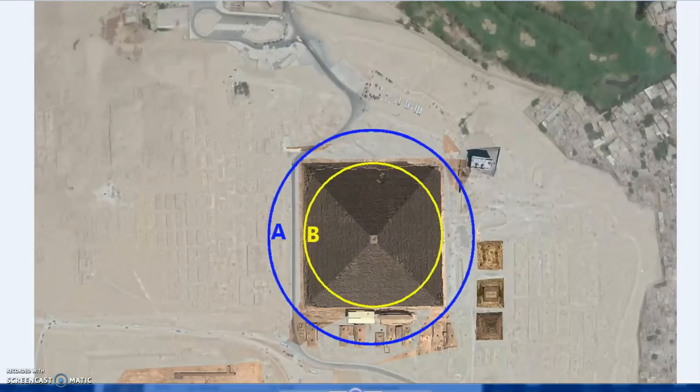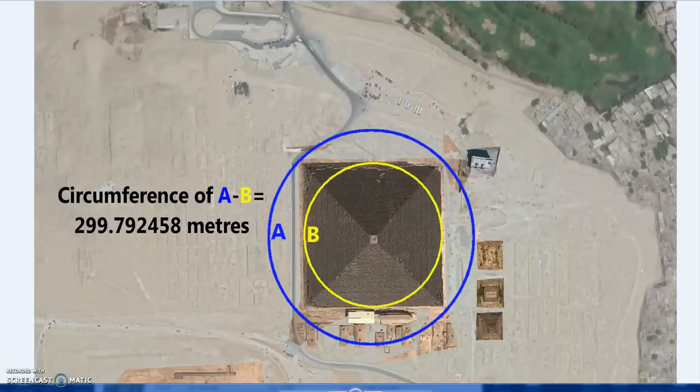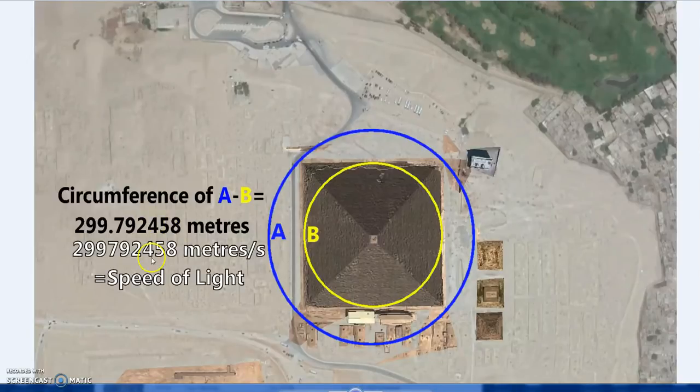But my point is you have the square, you draw a circle on the inside and then you draw a circle on the outside. And they say that if you subtract the yellow circle circumference from the blue circle, you should get 299.792458 meters. So that's now fractions of a millimeter, that 458, and the speed of light, 299.792458 meters per second.